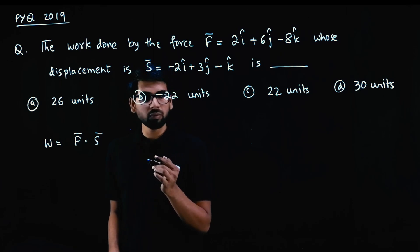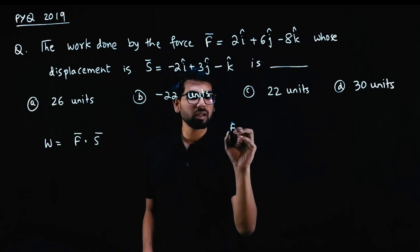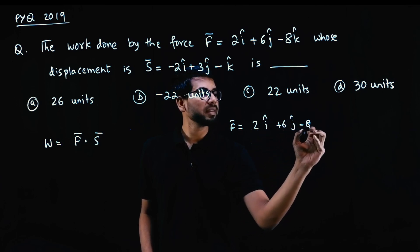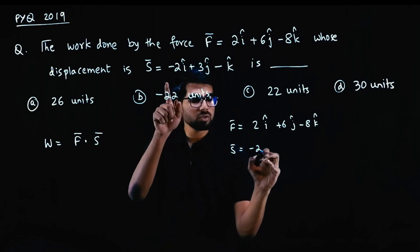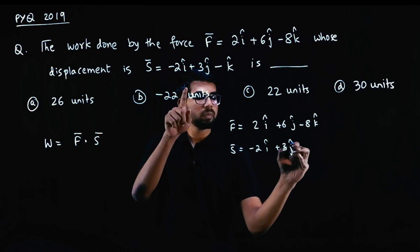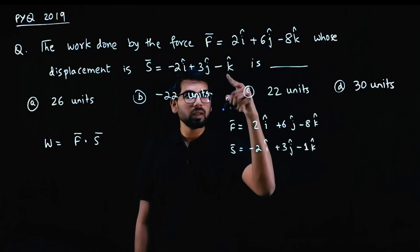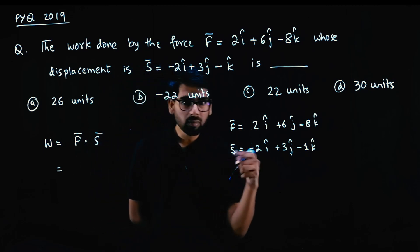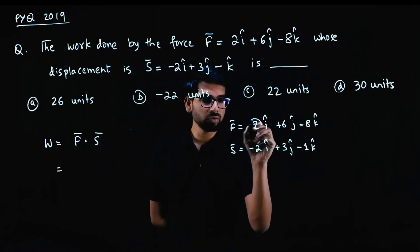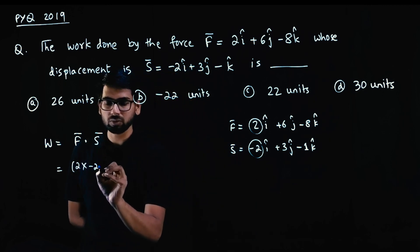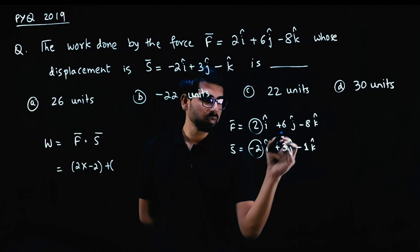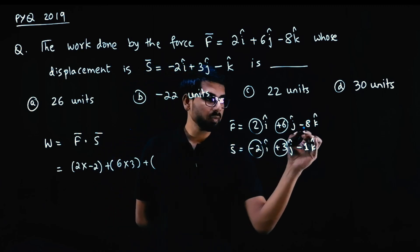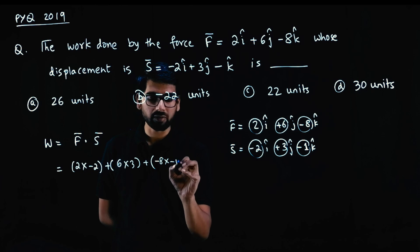How do you take the dot product of two vectors? F vector = 2i cap + 6j cap - 8k cap. S vector = -2i cap + 3j cap - 1k cap. It is the sum of the products of the coefficients. So i coefficients: 2 into -2. Plus j coefficients: 6 into 3. Plus k coefficients: -8 into -1.